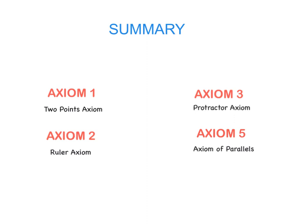To finish up, make sure you know all the axioms and their second names: axiom one is the two points axiom, axiom two is the ruler axiom, axiom three is the protractor axiom, and axiom five is the axiom of parallels. Know exactly what each one is about and when to use it.